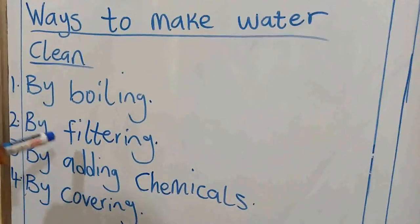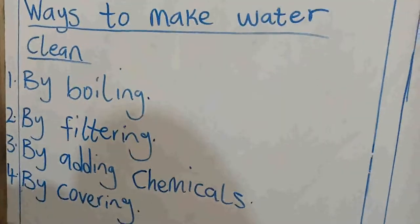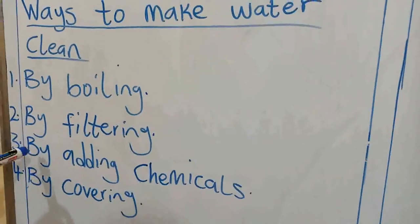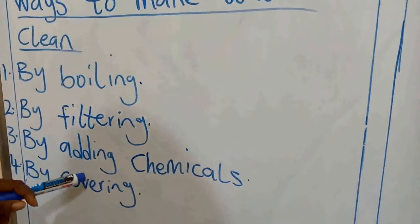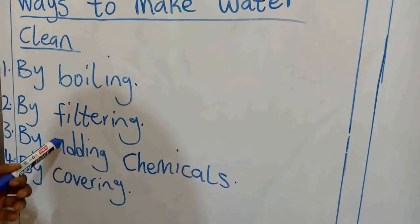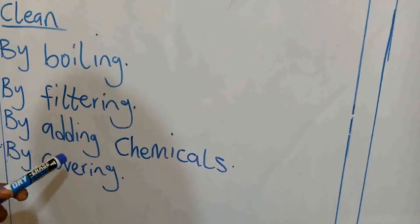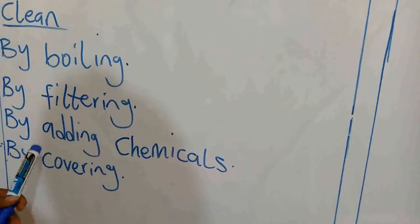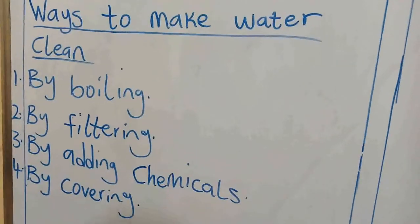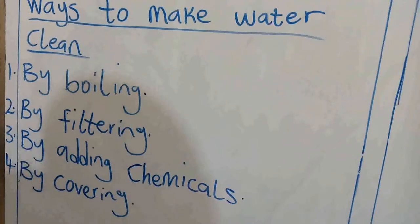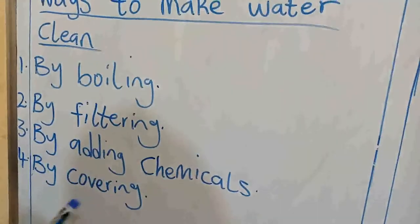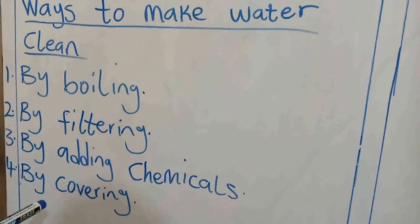The second way is by filtering. Most of us have filters in our house — mommy uses one. So we can use it to filter our water. The third way of making water clean is by adding chemicals. There are some chemicals that are not dangerous to our health — like water guard — that we can use to make our water clean. And the next one is by covering. If you have a container where you put water, you should not leave it open. Cover it at all times so that dirt will not get inside.